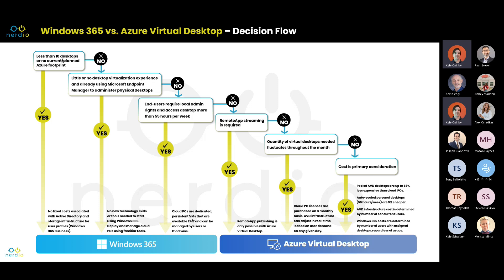Do you have end users that require local admin rights and are definitely using their desktops fairly regularly throughout the month? Then Windows 365 might be a great choice. Moving to AVD: do we need to publish remote apps — just Outlook or a point-of-sale application, but not necessarily a whole desktop? Then you need to go AVD. Does the quantity of utilization fluctuate throughout the month, where you want to spin up and spin down? Then AVD. And if cost is a primary consideration — and these days how often is that not the case — then AVD is certainly the area where you can drive that cost down.